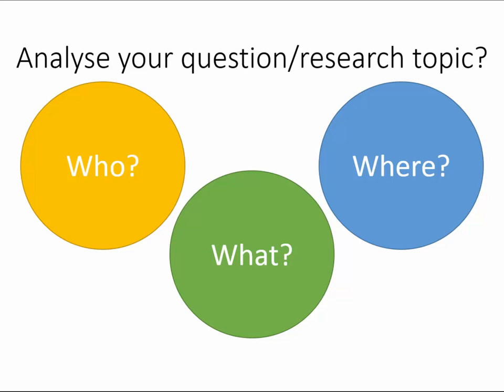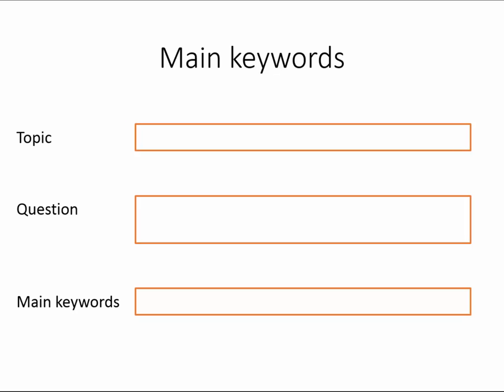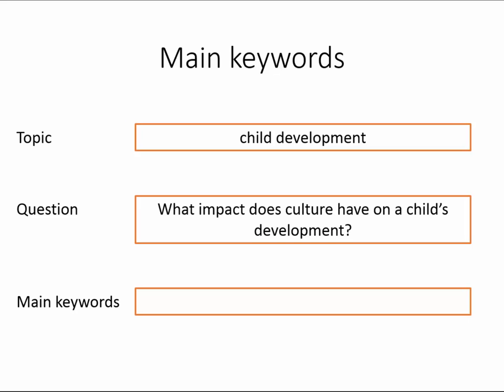Before you search for a topic using Library Search, unpack the assignment question or subject you are researching. Think of the keywords you want to use in your search — ask yourself who, what, and where to help identify potential keywords. In this example, we've been given a topic of child development, and the question we have created is about the impact that culture has on a child's development.